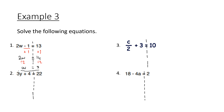Next: 3y plus 4 is equal to 22. First, get rid of the plus 4 — opposite is subtract, so subtract 4 from both sides, leaving 3y equals 18. Then we have times by 3, so do the opposite and divide both sides by 3, leaving y equals 6.